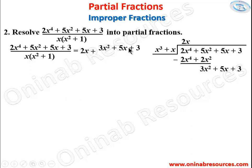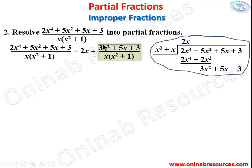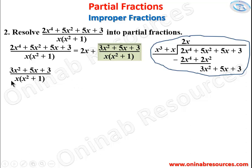The fraction equals 2x plus (3x² + 5x + 3) / [x(x²+1)]. We now resolve 3x² + 5x + 3 over x(x²+1) into partial fractions. The linear factor x gives A/x, while the non-linear factor of degree 2 gives (Bx + C)/(x²+1).